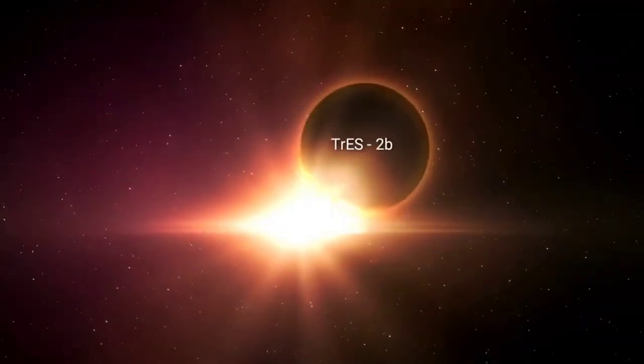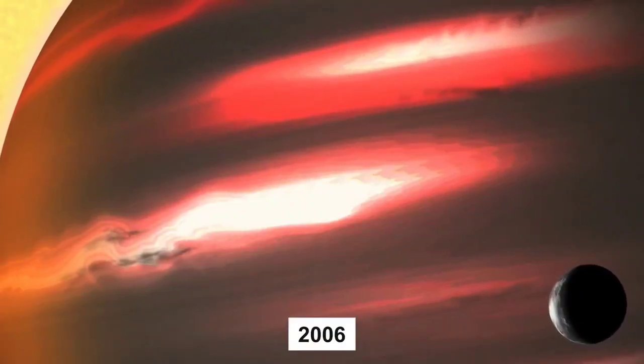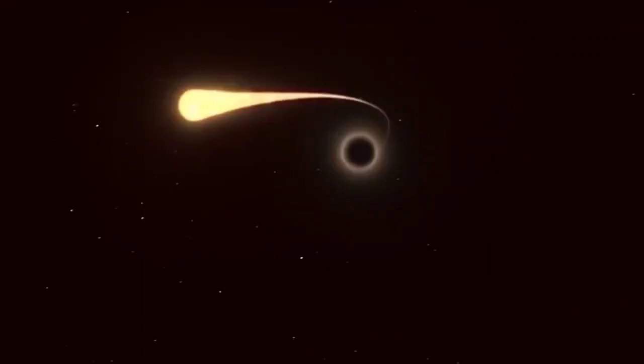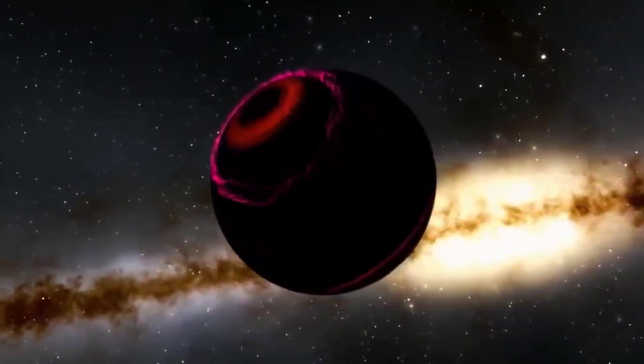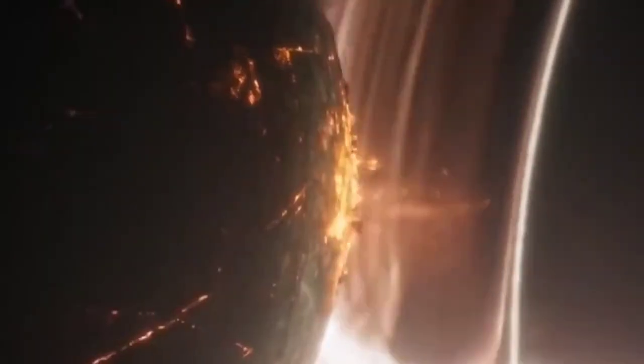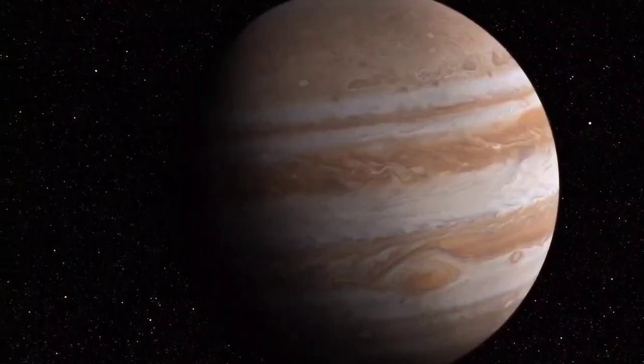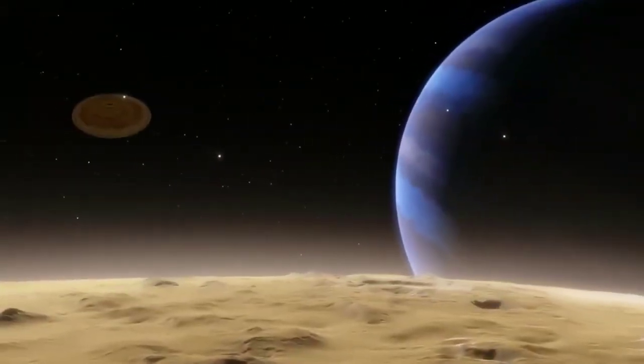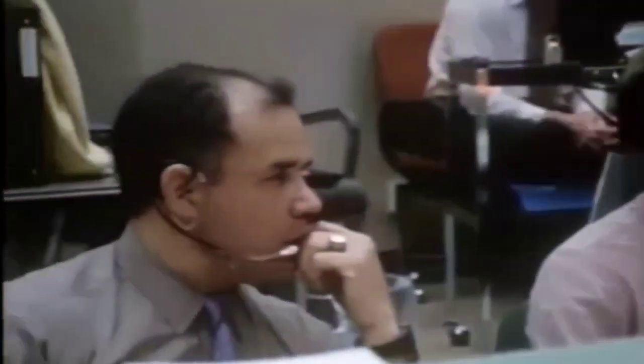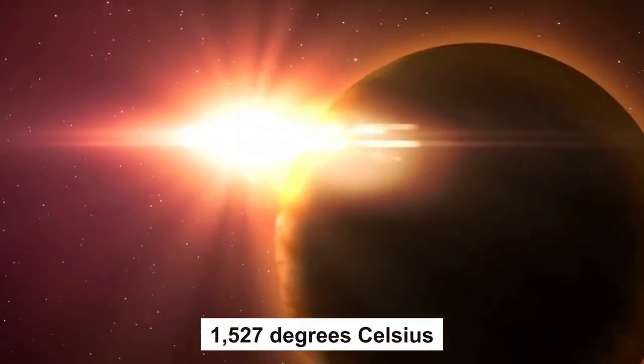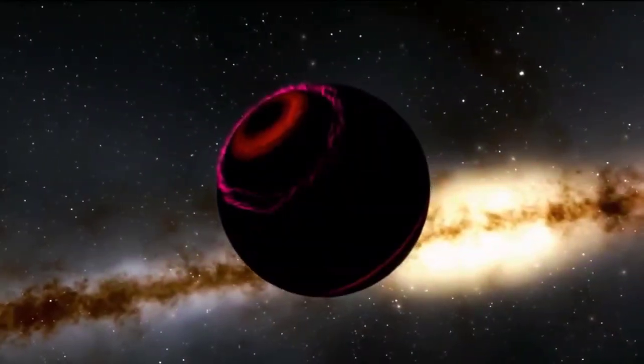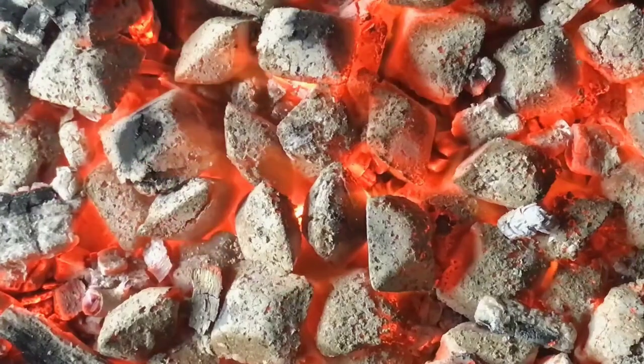The next exoplanet is TRES-2b. TRES-2b, an exoplanet found in 2006 by the Transatlantic Exoplanet Survey (TRES), is recognized for being darker than coal. It is formed in the constellation Draco, around 750 light-years from Earth. TRES-2b is a gas giant with a mass and size very similar to Jupiter, but it orbits its parent star very closely, making it a hot Jupiter. TRES-2b orbits its star in just two and a half days, and due to its proximity to the host star, scientists believe that its surface temperature is roughly 1,800 Kelvin, or 1,527 degrees Celsius. It is one of the most fascinating exoplanets yet found. Its estimated temperature is so high that it emits a hazy red glow resembling a lump of burning coal.